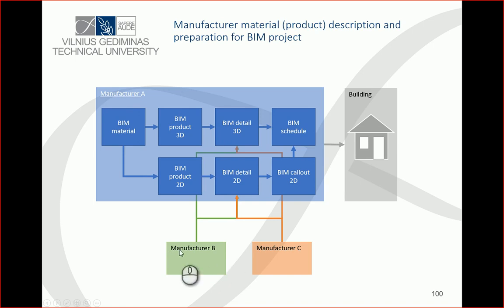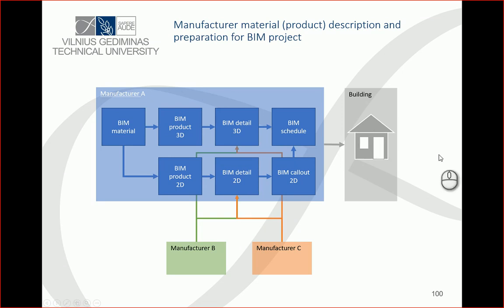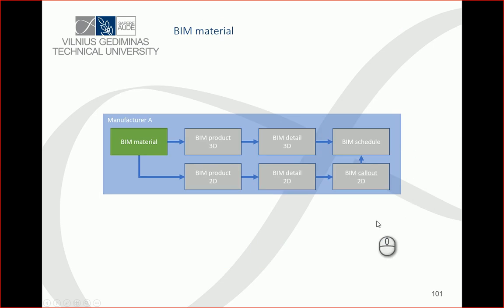When you have all these blocks, the material library — BIM product 3D components, 2D components, detail 3D and 2D components, connection 2D components, and BIM shadows — you can combine this information and use it in your projects, saving a lot of time preparing them. Let's talk about each part.